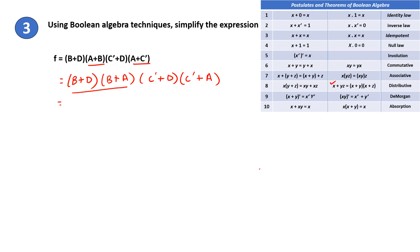Using the distributive law: X plus Y and X plus Z equals X plus YZ. Here B represents X, D is Y, and A is Z. So this can be simplified and written as B plus AD. Again take this and use the same distributive law, and this can be written as C' plus AD.